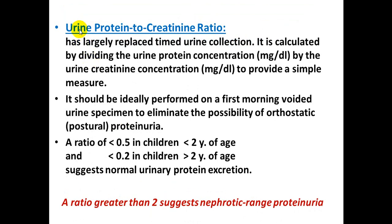The third method is the urine protein-to-creatinine ratio, which has largely replaced timed urine collection. It is calculated by dividing urine protein concentration (mg/dL) by urine creatinine concentration (mg/dL). It should ideally be performed on the first morning voided urine sample to eliminate the possibility of orthostatic proteinuria.